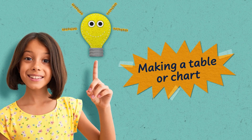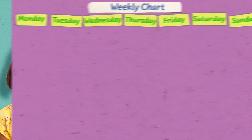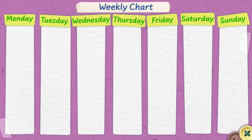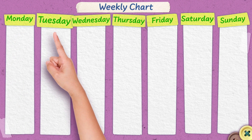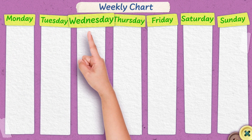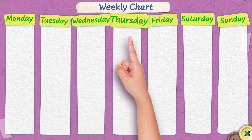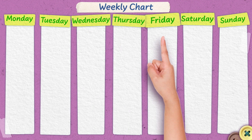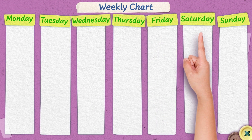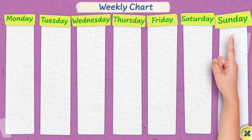How can I solve this problem? I'll try making a table or chart. My weekly chart shows the days along the top: Monday, Tuesday, Wednesday, Thursday, Friday, Saturday and Sunday.